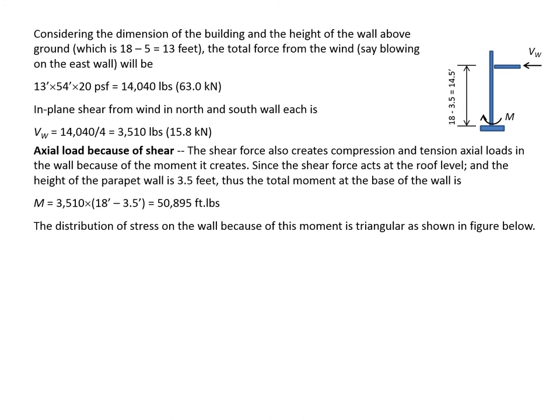The shear force creates compression and tension axial loads in the wall due to the overturning moment M. Since the shear acts at the roof level and the parapet height is 3.5 feet, we use 14.5 feet for the moment: M = 14.5 × 3,510 = 50,895 ft·lb.